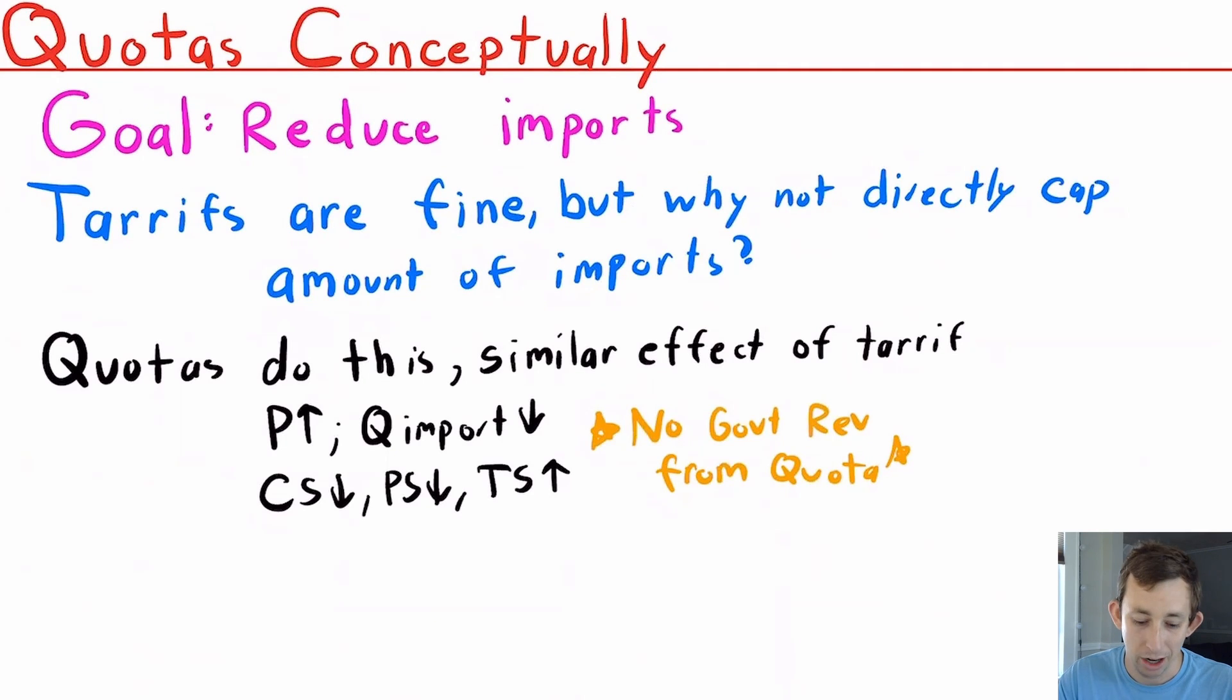And the reason a quota is sometimes used is because maybe you're raising the price of imports but it's really hard to enforce, or people are getting around the tariff, or you'd have to raise the tariff by a significant amount. So what do you do? You just say, okay, you're allowed to bring in 10 donuts from other towns.